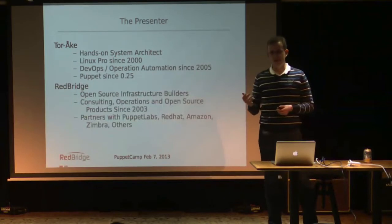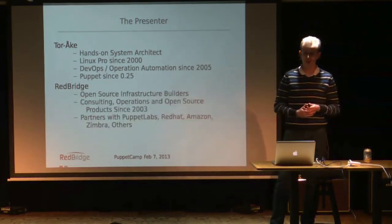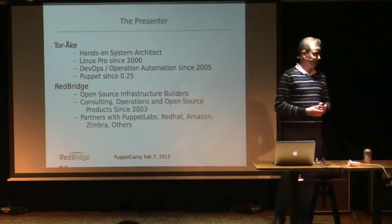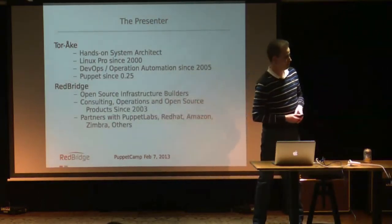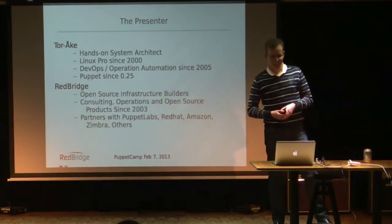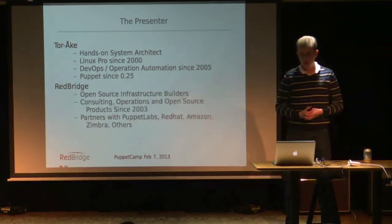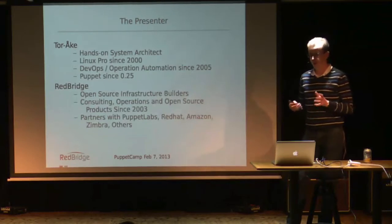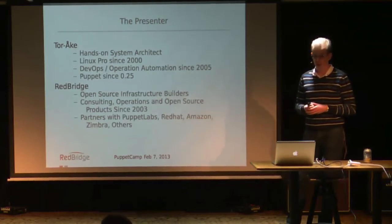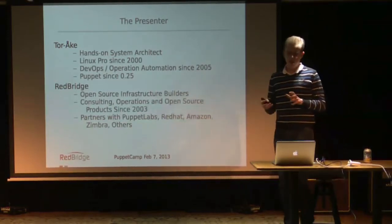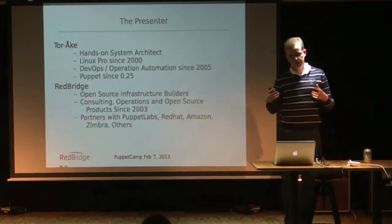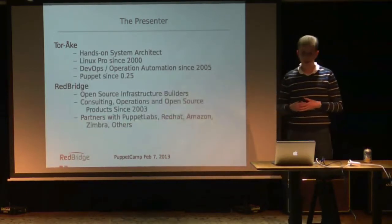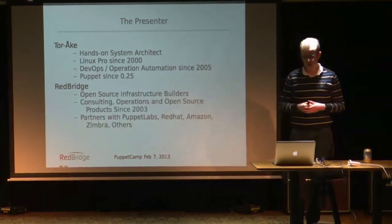Redbridge is a company that was started with the idea to build stuff with open source. I mean all kinds of boring administrative business systems, or even more unsexy, the infrastructure for boring administrative systems. We work with cloud stuff and complex systems — things like Amazon and really big systems — and one of those systems is Puppet.